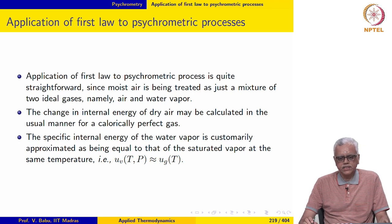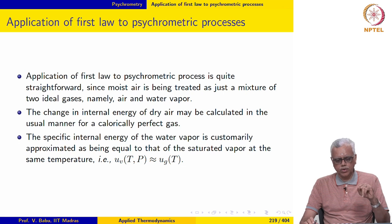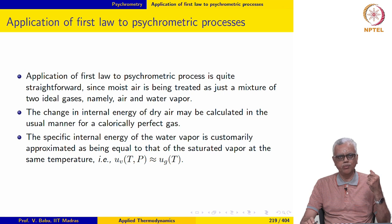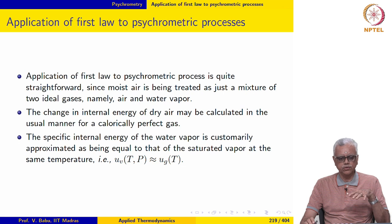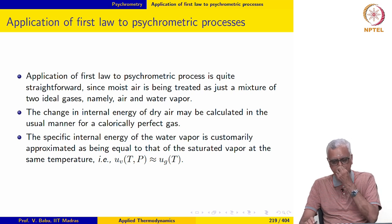We will look at the application of the first law to psychrometric processes, covering both flow and non-flow processes. Flow processes are probably more common in HVAC — for example, a refrigeration plant on the roof of a building connected to rooms through ducts. Non-flow situations also exist, so we will look at both.